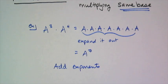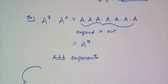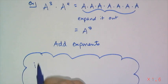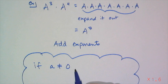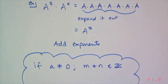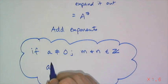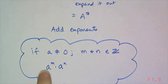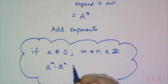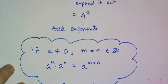Here's how I write this as an actual rule. If a is not equal to zero, and in algebra one our exponents are integers — because you don't look at non-integer exponents until later — a to the m times a to the n, same base multiplied together, what I do is add the exponents. So this is called the product rule.